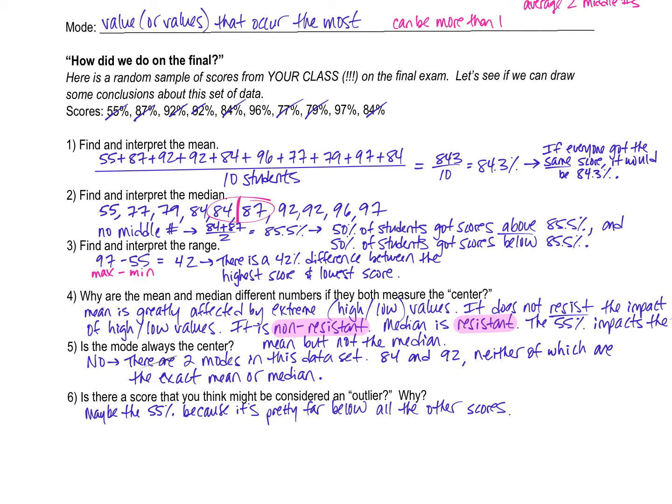But what does that number actually mean? That means if everyone got the same score, it would be 84.3. That is roughly the average of my final exam. And keep in mind, this is just for my 10 students that I sampled here.